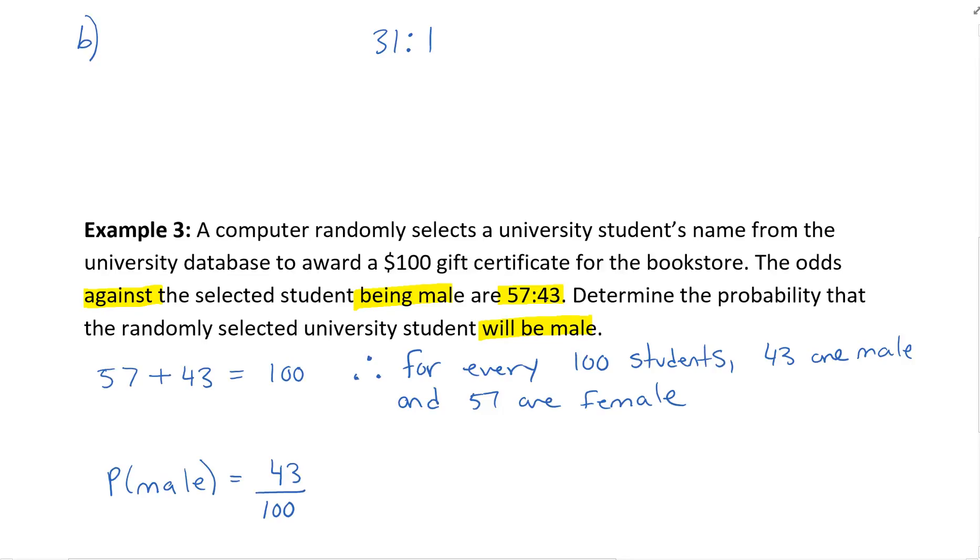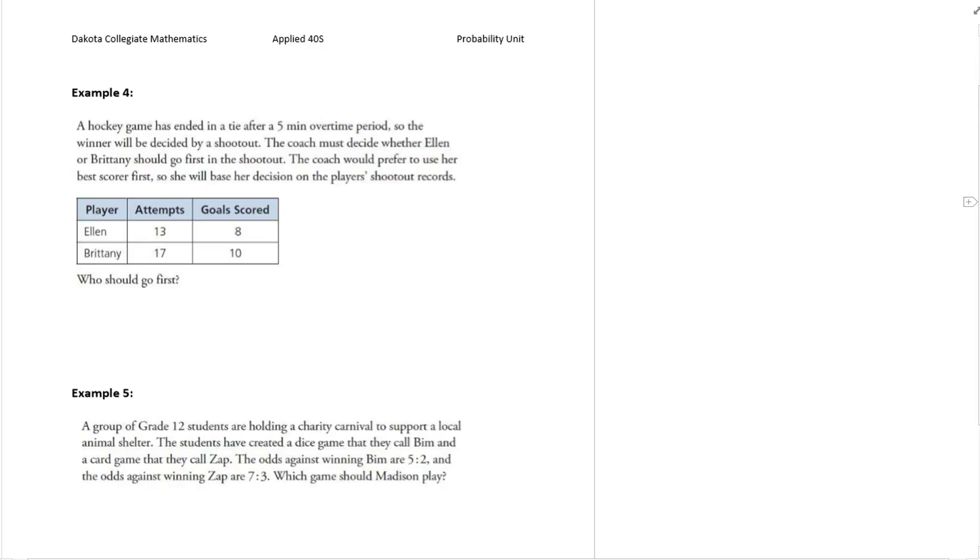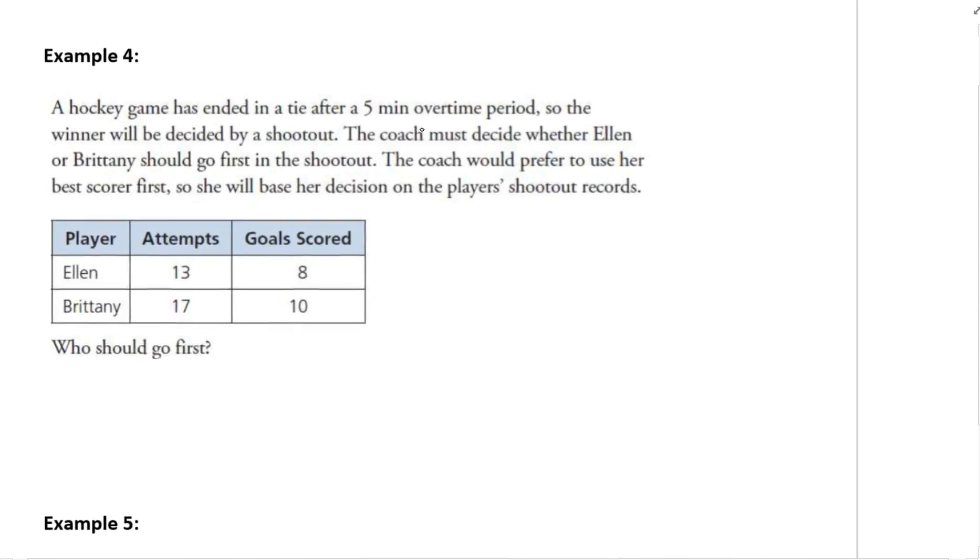A little bit confusing—re-read it a couple times to make sure you understand that 'against the selected student being male' makes it confusing. Our last two examples have to do with games and sports, and that's really where we see odds most often or more commonly.